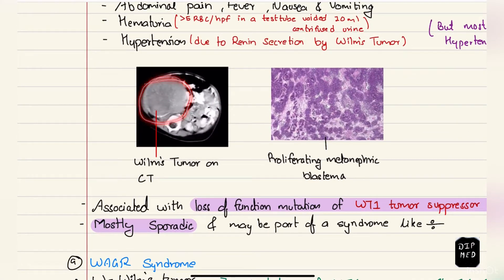On CT scan you can see the tumor, and in the histology you can see the proliferating metanephric blastema.